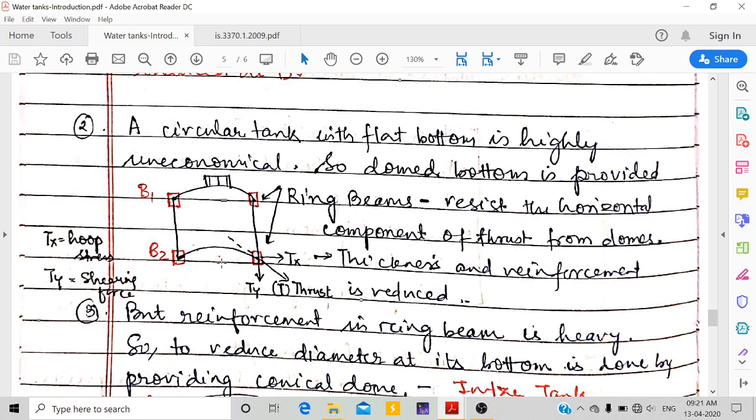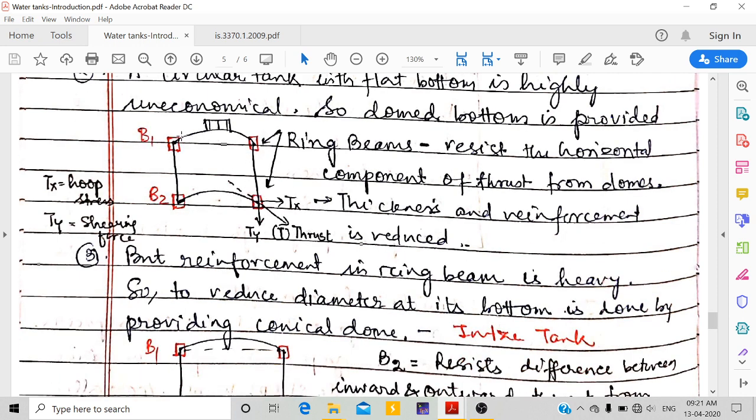So domed shape, domed bottom is provided. Once domed bottom is provided, these ring beams will resist horizontal component of thrust from the domes, and the thickness and reinforcement also get reduced in this dome. If you have seen arches, they are better than straight beams because there is a horizontal component - similar concept is used here.